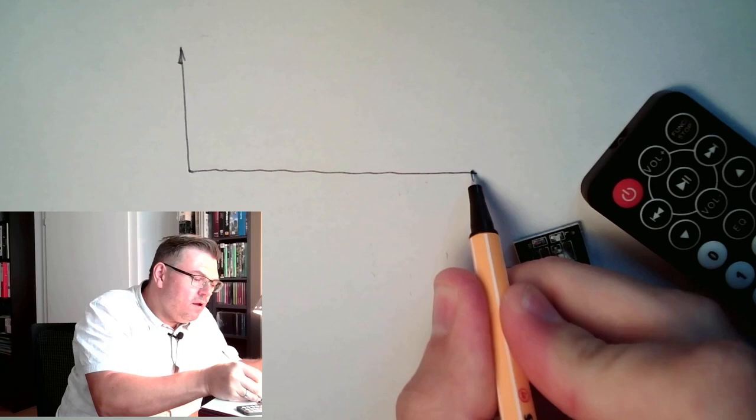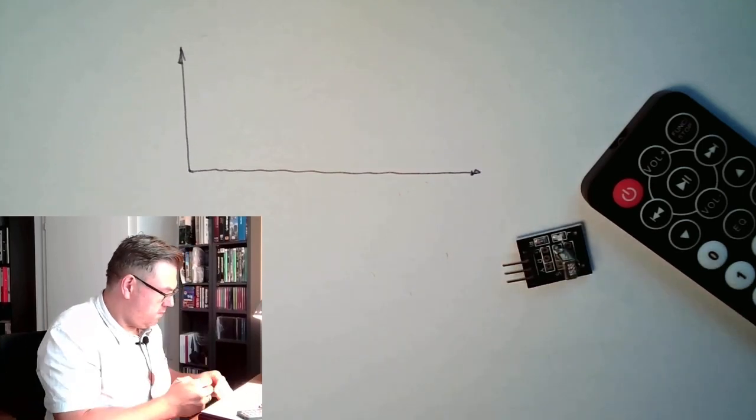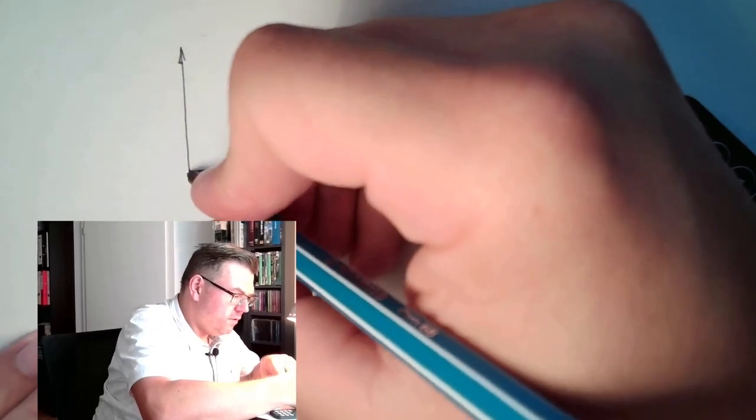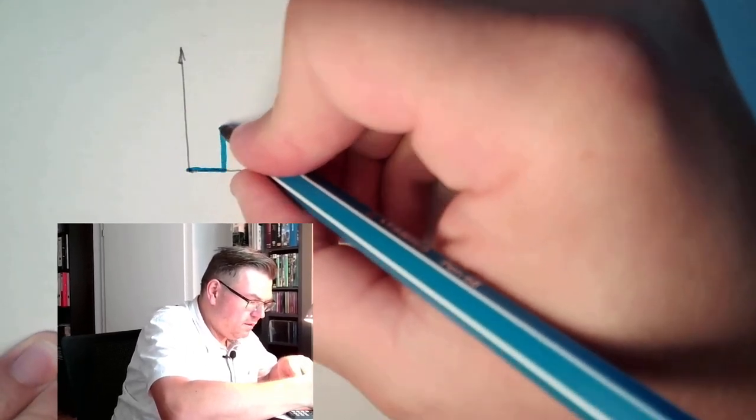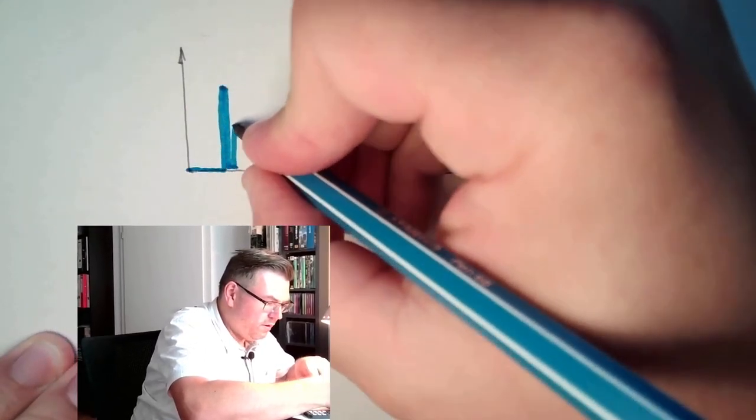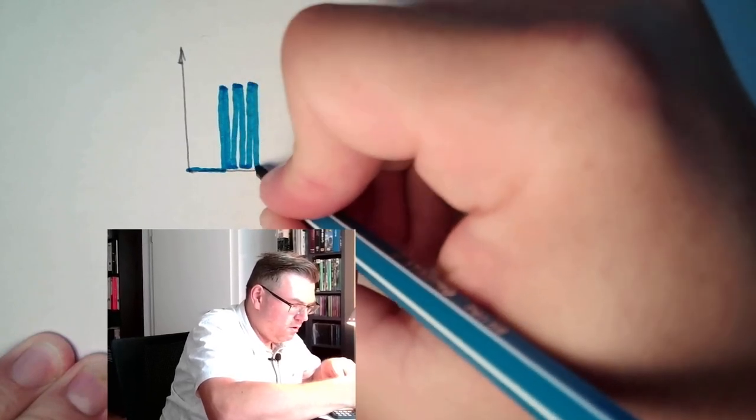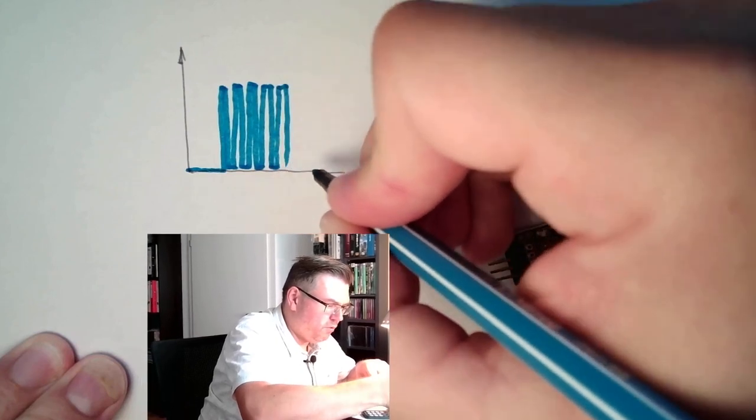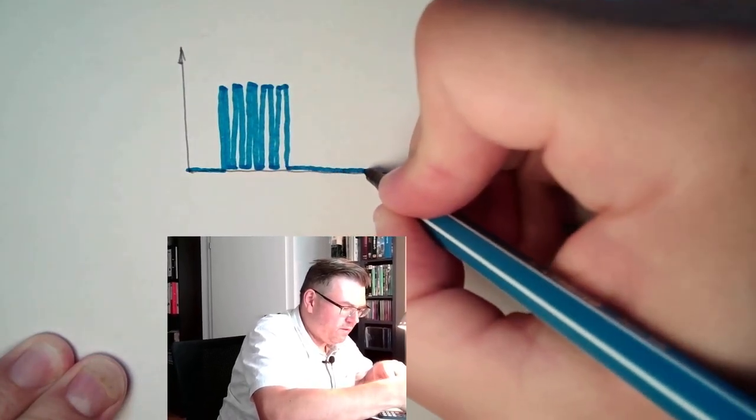We have here then first nothing, then we press the button. Then the light will be turned on and off, on and off very fast, with 38 kilohertz, so this is some sort of burst. And the length of the burst...